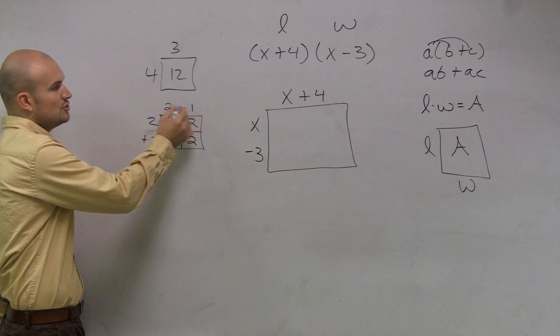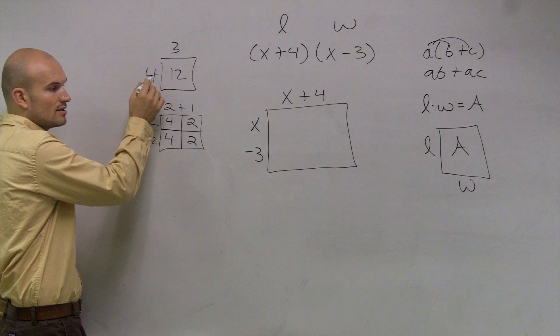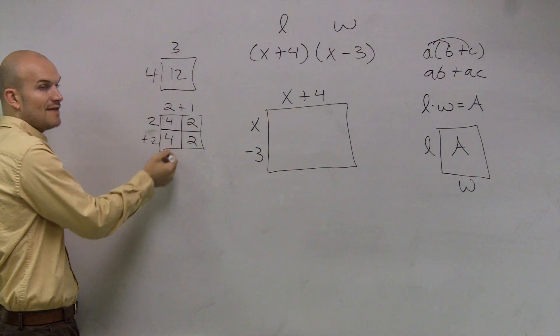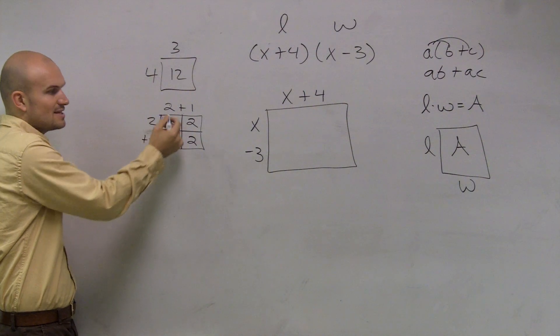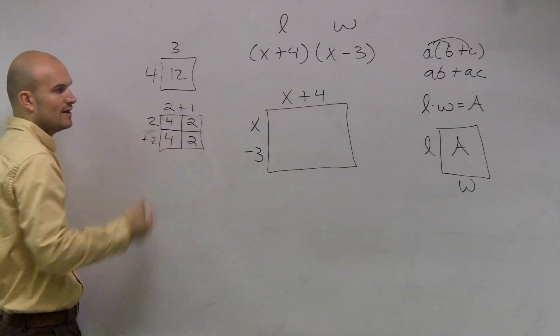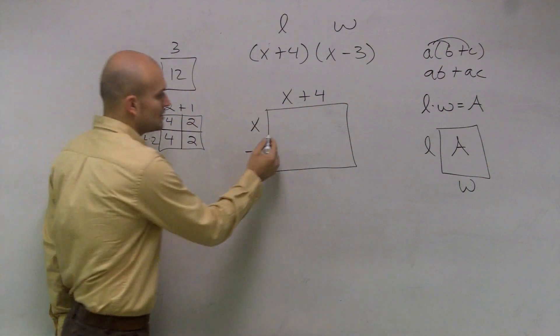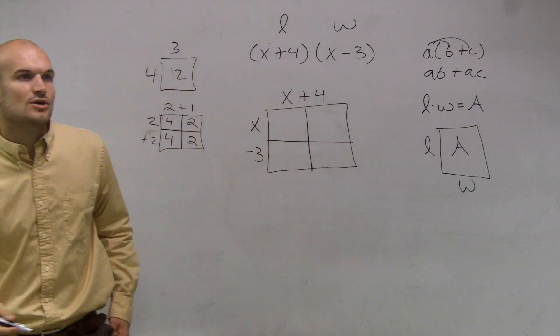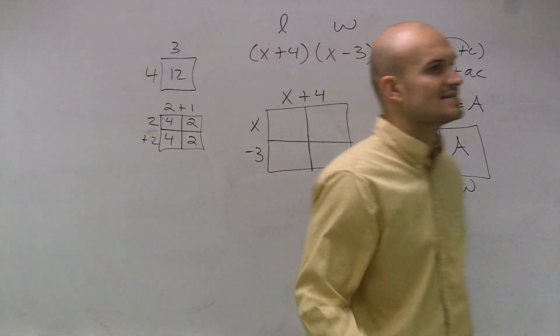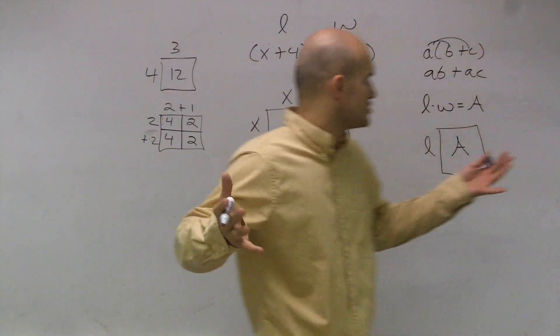So you guys see how 2 plus 1 is 3 and 2 plus 2 is 4? So what I do is if I have two numbers, I'll just break it up into two different boxes. This side two different boxes. So I'm creating four different areas. And that's the exact same thing we're going to do here. I'm just going to give each one of the numbers as its own length of a smaller box inside of the larger area.